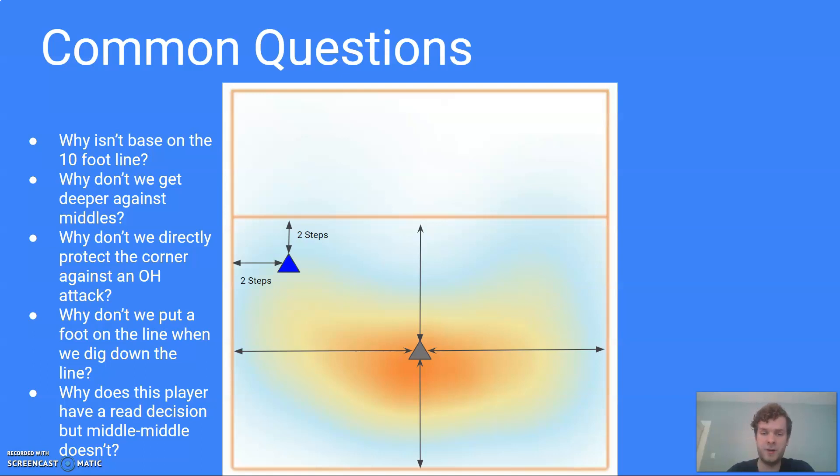Whereas the middle middle defender is in orange the whole time. We know tons of balls go to middle middle, so they just need to stay there and help play those balls and occasionally make a read to go play a little bit outside their zone. But our left back defender, they're in this trickier spot where there's more variability. Hitters hit differently and balls land in more random places as you get farther and farther away from middle middle. So this defender has more court to cover because they're probably going to get hit at a little bit less than that middle back defender is.